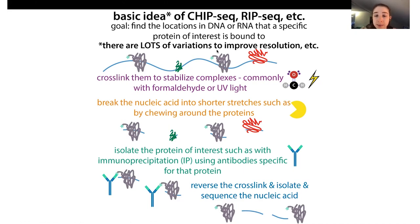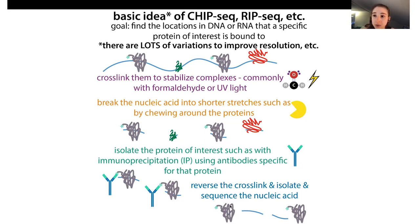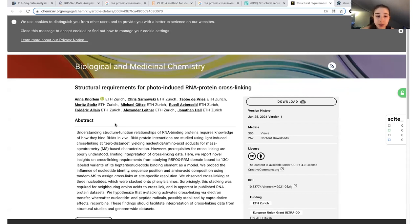With ChIP-seq, resolution depends on how close to the protein you chewed away the DNA. A problem with formaldehyde is that you're crosslinking protein to protein as well, so even if you isolate one protein, if that protein is attached to another protein you won't know whether both proteins were actually directly bound to that sequence. With UV light, you don't get protein-protein crosslinking the same way, only protein-RNA crosslinks, so hopefully you have less of an issue with that.